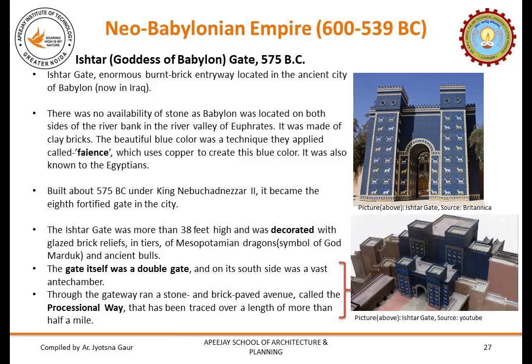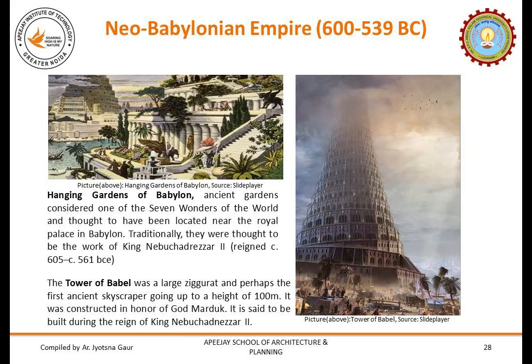The Ishtar Gate was more than 38 feet high and was decorated with glazed brick reliefs of Mesopotamian dragons — a symbol of god Marduk — and ancient bulls. The gate was a double gate with a vast antechamber on its south side. Through the gateway ran a stone and brick paved avenue called the Processional Way, traced over a length of more than half a mile. Under the reign of Nebuchadnezzar, the Hanging Gardens of Babylon and the Tower of Babel were built. The Hanging Gardens were considered one of the Seven Wonders of the World, thought to be located near the royal palace. The Tower of Babel was a large ziggurat reaching a height of 100 metres, considered to be constructed in honour of god Marduk.